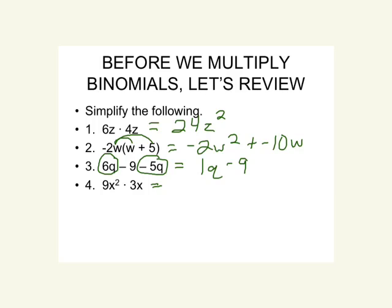Our last warm-up switches back to multiplication: 9x squared times 3x. Multiply the coefficients — 9 times 3 is 27 — and x squared times x gives us x cubed. Remember, when multiplying we add the exponents. There's a lot going on with multiplication vs. addition, so I wanted these review problems to clarify the rules before we get into chapter 9 section 3.